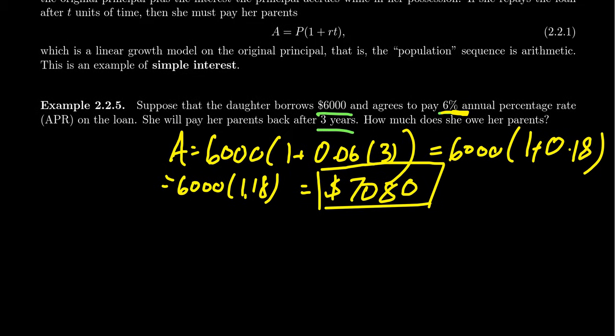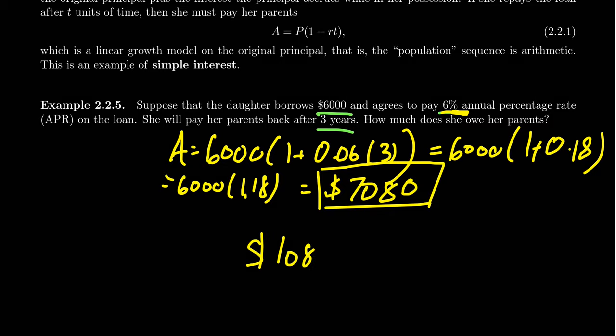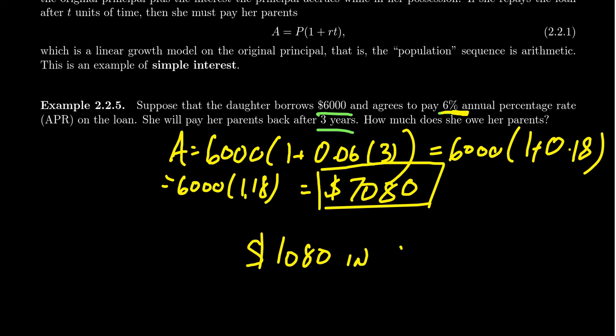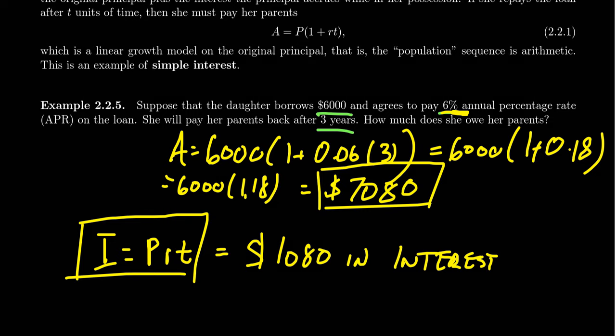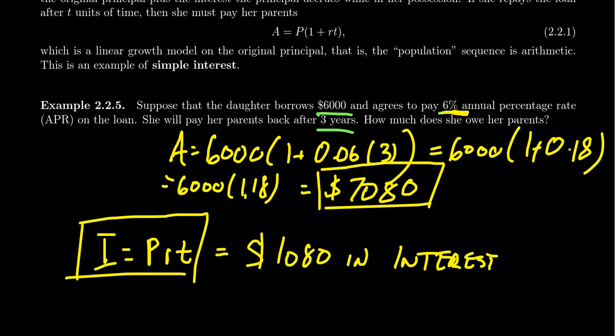Be aware that if you subtract 6,000 from that, that means she's paying $1,080 in interest. That's the cost of the loan, which is just going to be PRT. Oftentimes when people talk about simple interest, they sometimes write it this way, that interest equals PRT. That just gives you the interest. You have to add the interest to the principal to tell you how much you'll pay back at the end.